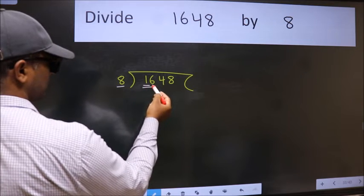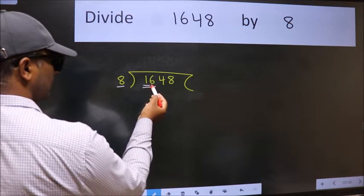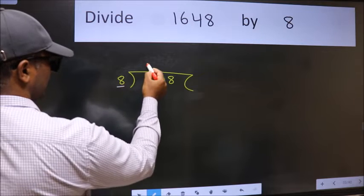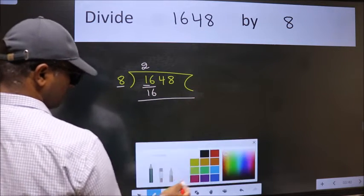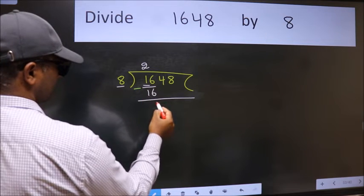So we should take two numbers, 16. When do we get 16 in the 8 table? 8 times 2 is 16. Now we should subtract. We get 0.